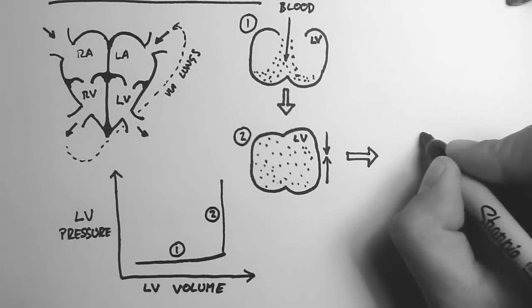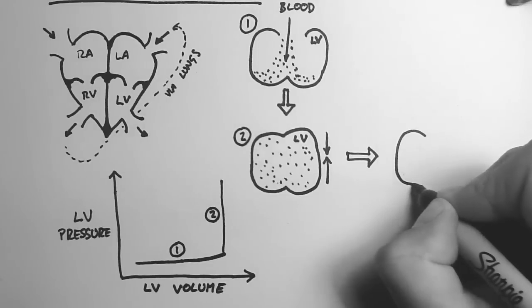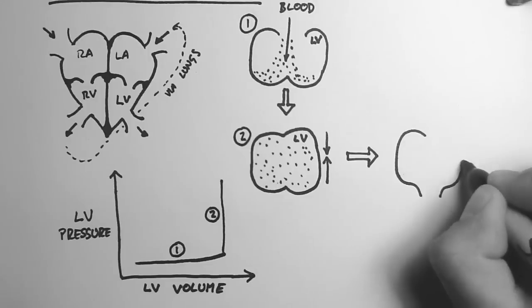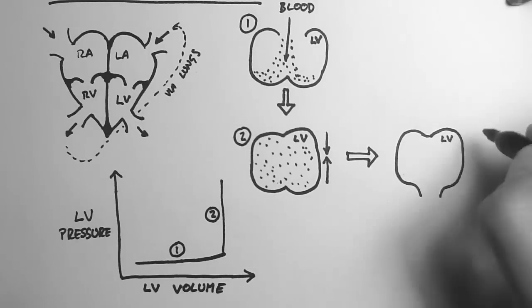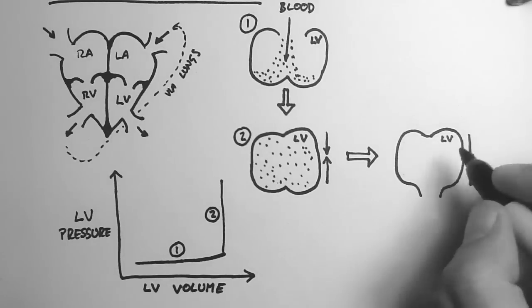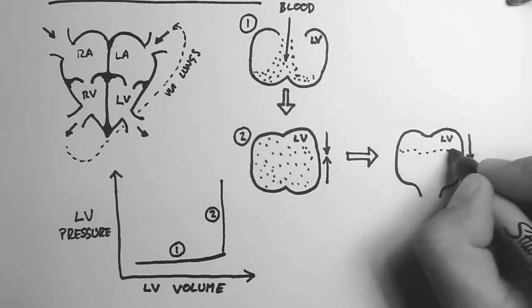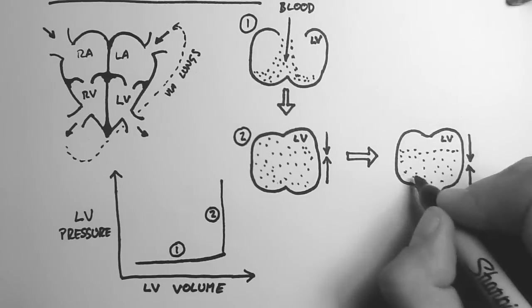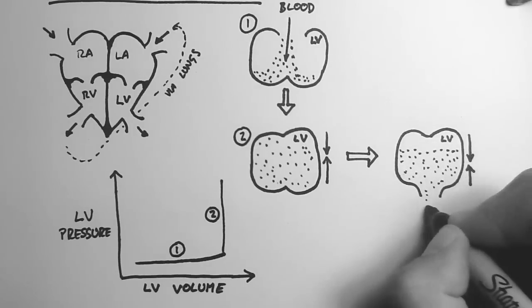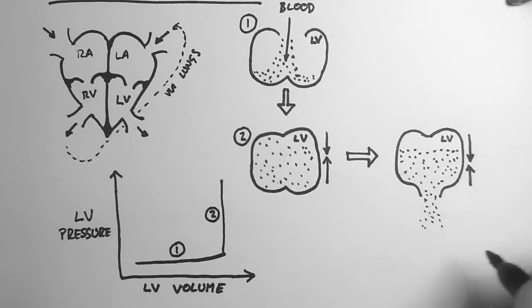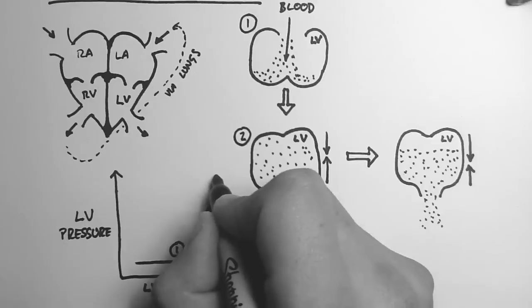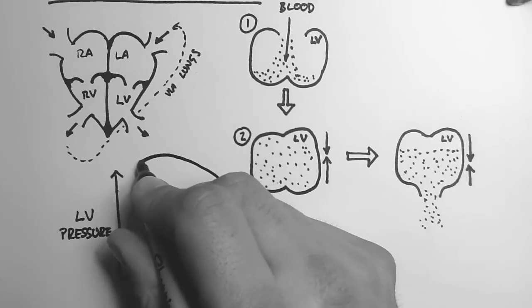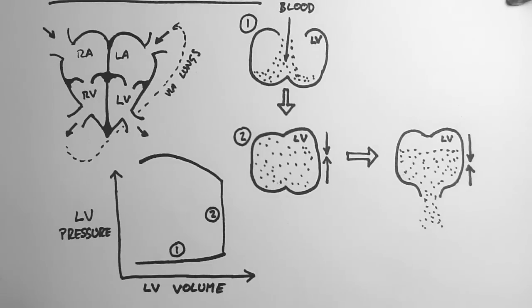The next step is the opening of the aortic valve. Remember that the left ventricle is still contracting. So the pressure still goes up a little bit, but the volume starts to go down. So on my pressure volume curve, I'll show less volume and more pressure, until even the pressure starts to level off.